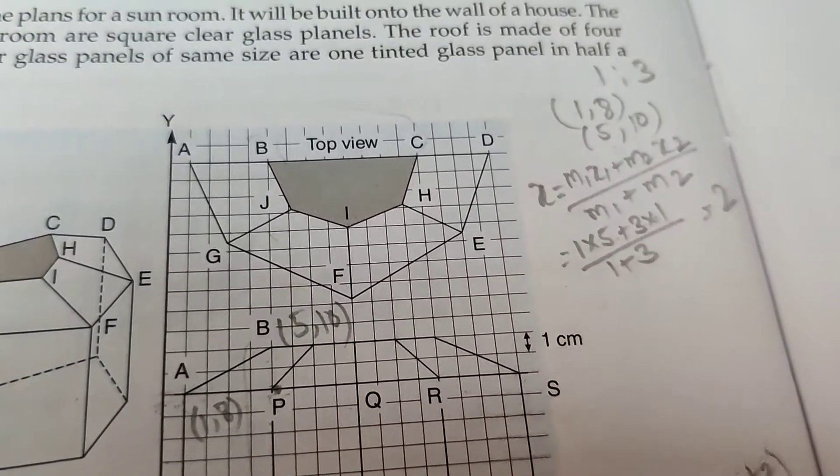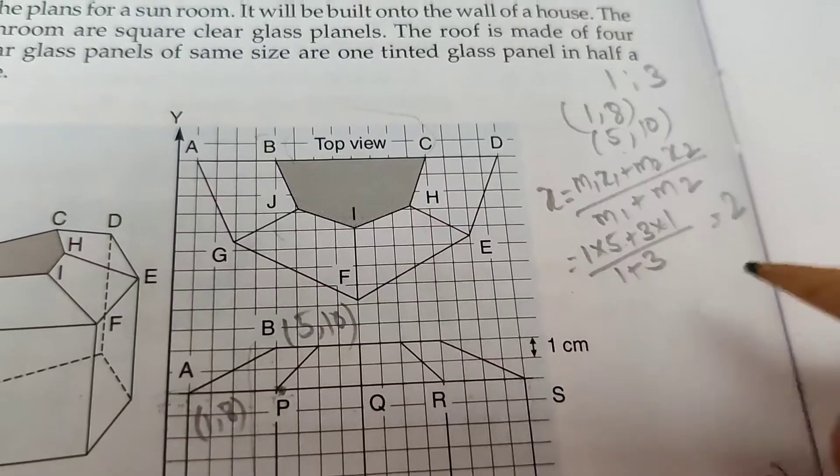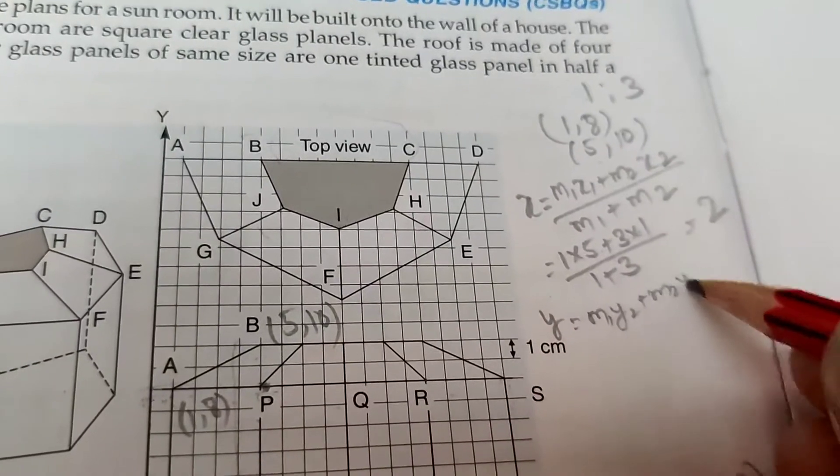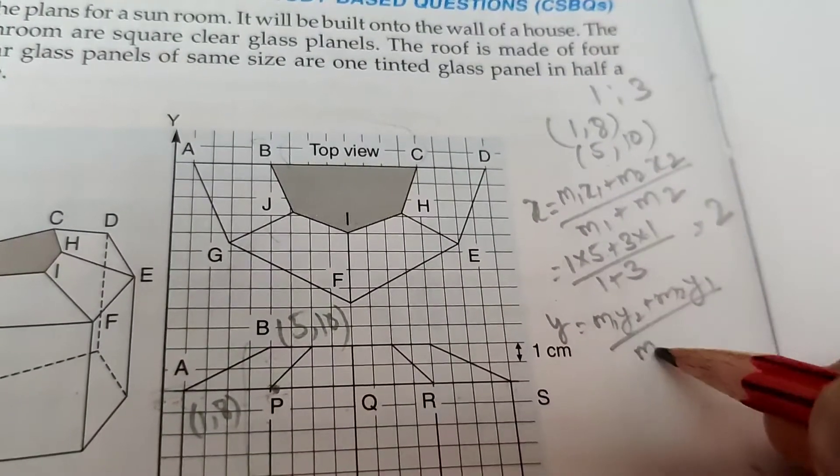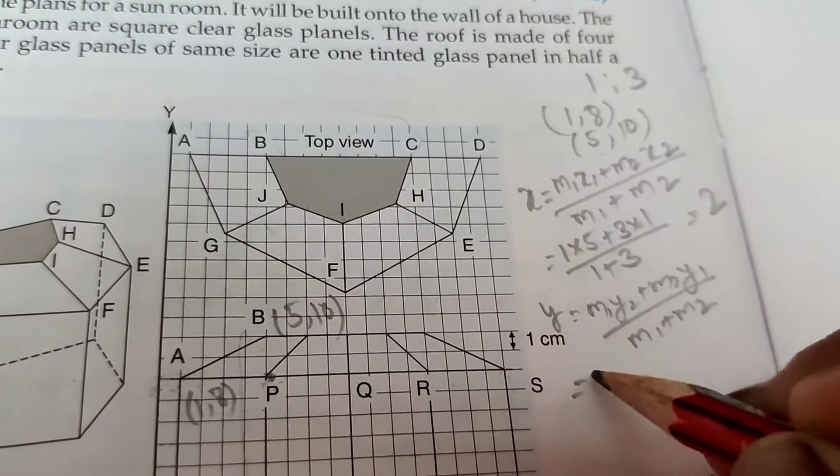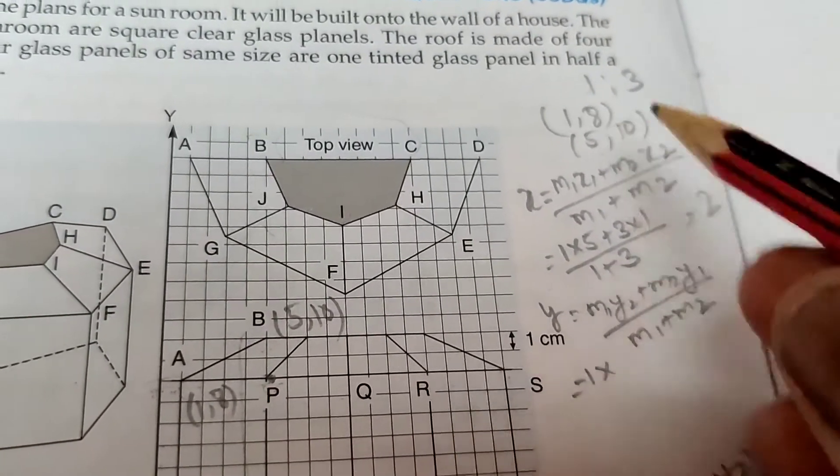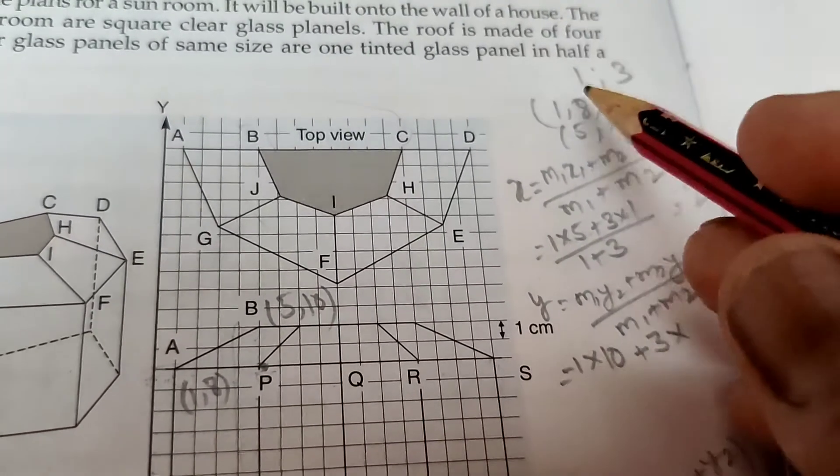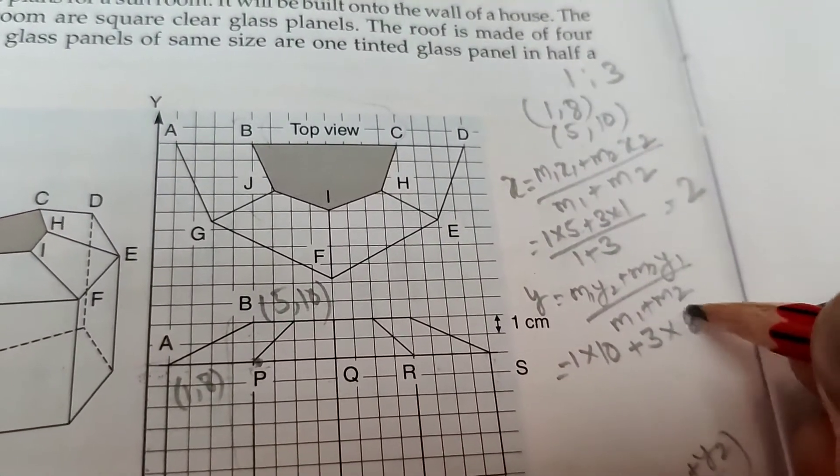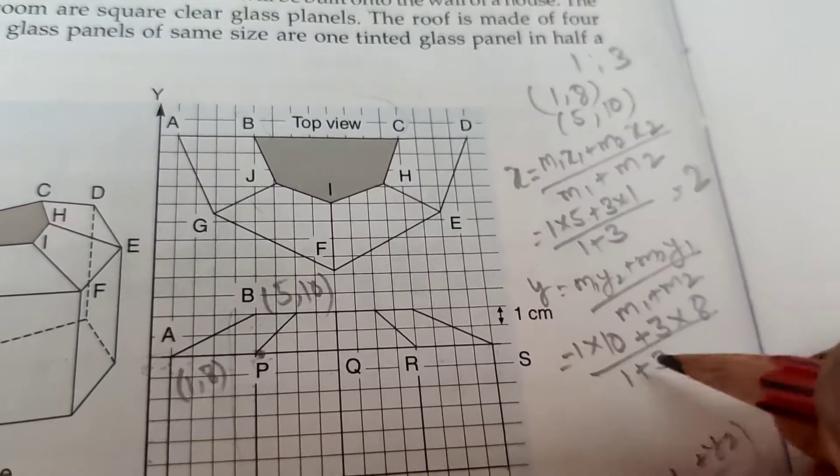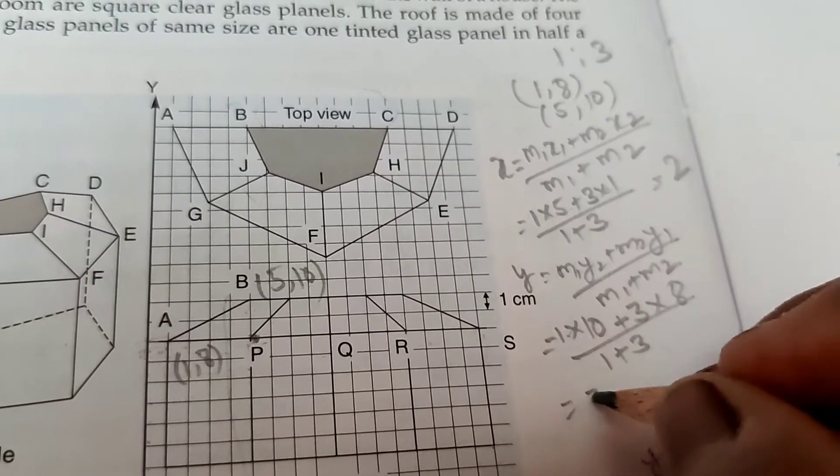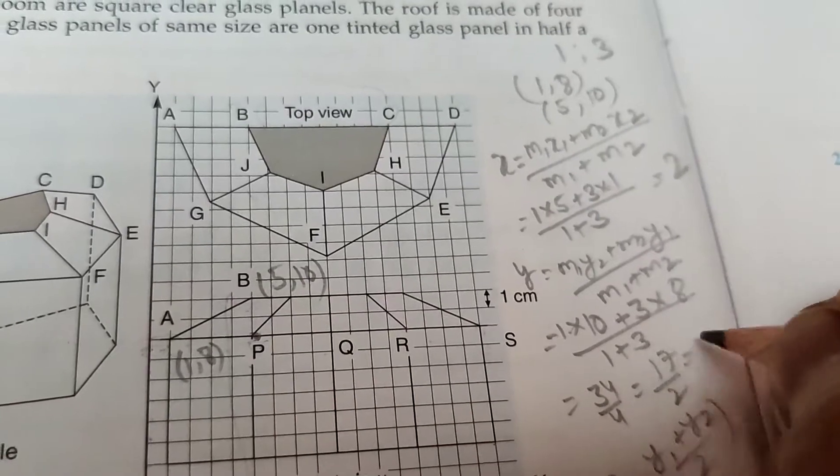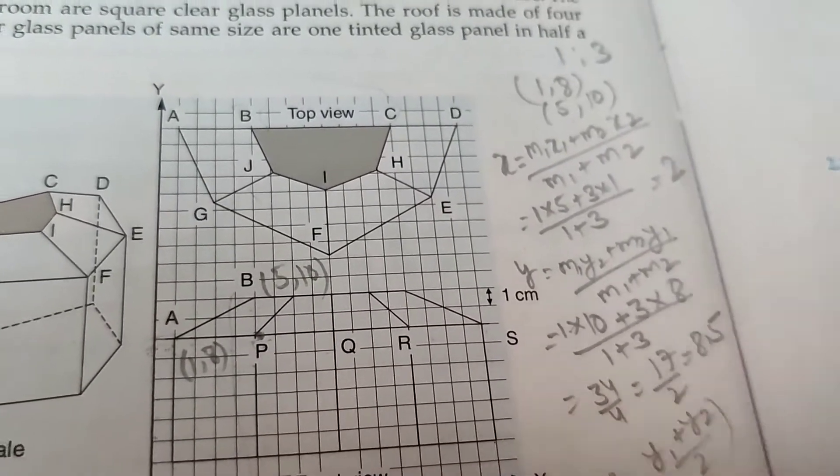Now for y: the same formula, m1y2 plus m2y1 by m1 plus m2. y1 is 8, y2 is 10. So 1 times 10 plus 3 times 8 by 1 plus 3. 10 plus 24 is 34 by 4, which is 17/2 or 8.5. The coordinates are 2 and 8.5.